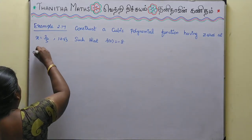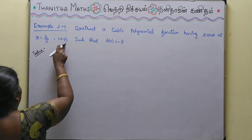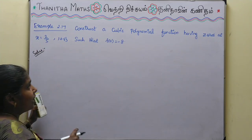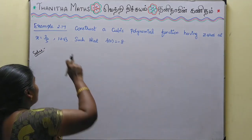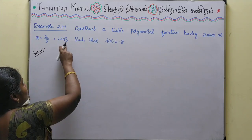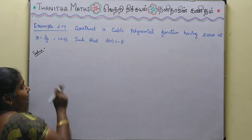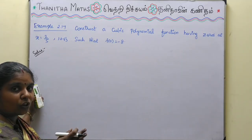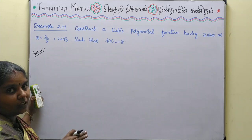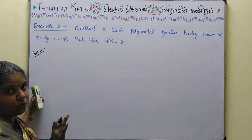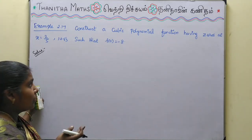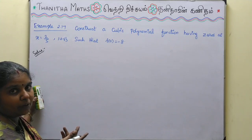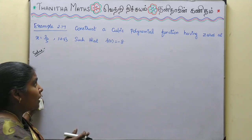We are given two zeros of the cubic polynomial. Since 1 + √3 is a zero, its conjugate 1 - √3 is also a zero. So 1 - √3 is the third zero, giving us the third factor of the cubic polynomial.